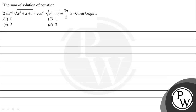Hello, let's read the given question. The question states that the sum of the solutions of the equation 2 sin⁻¹(√(x² + x + 1)) + cos⁻¹(√(x² + x)) = 3π/2 is minus lambda. Then lambda equals — and the options are given below.